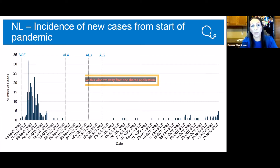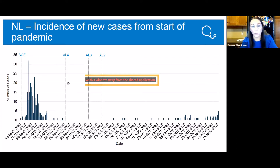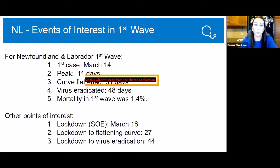I just wanted to show where we are in Newfoundland. This graph shows the number of cases per day from the start of the pandemic in March up until November 21st. You can see we had our major cluster early on, then the state of emergency was declared. We went into alert level four back in May, alert level three in early June, and we are currently still at alert level two. For Newfoundland, the first case was March 14th, the peak took 11 days, the curve was flattened within 37 days, the virus was eradicated within 48 days, and the mortality was 1.4%.